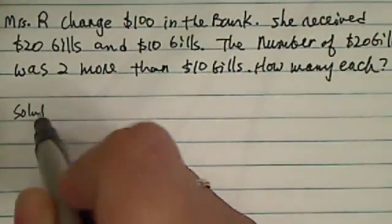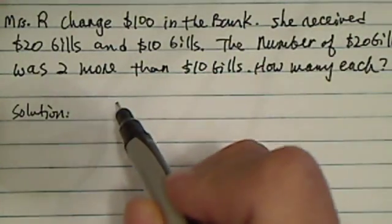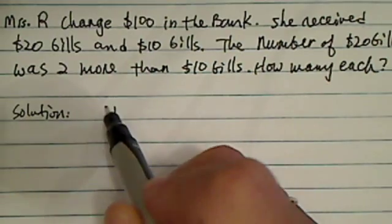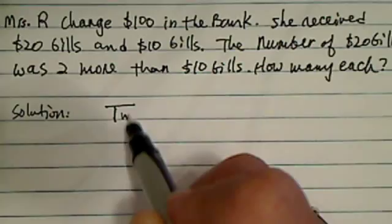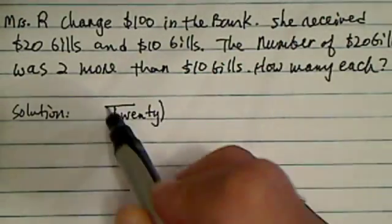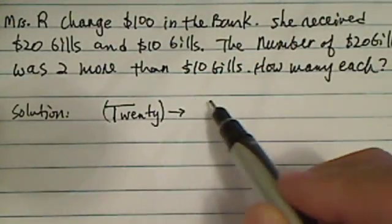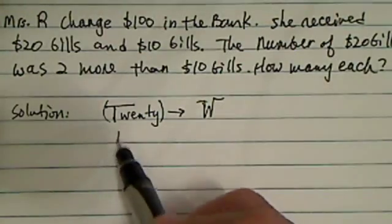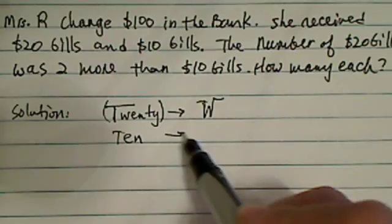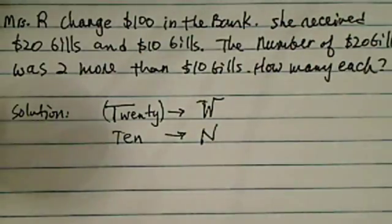The way you solve this is to set up variables first. Let's call the $20 bill W. The number of $20 bills is W. And then the $10 bill, we'll call it N.